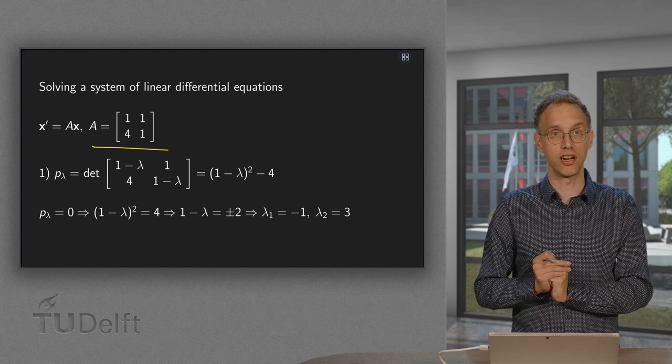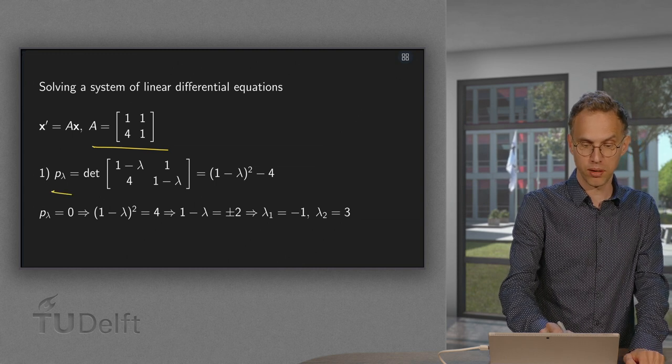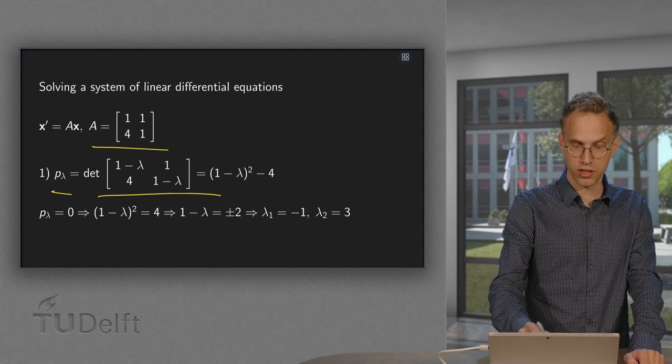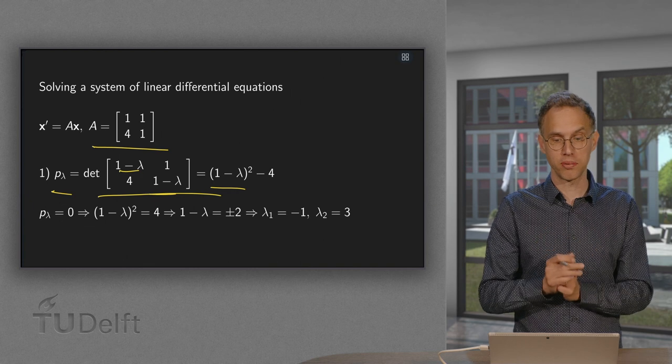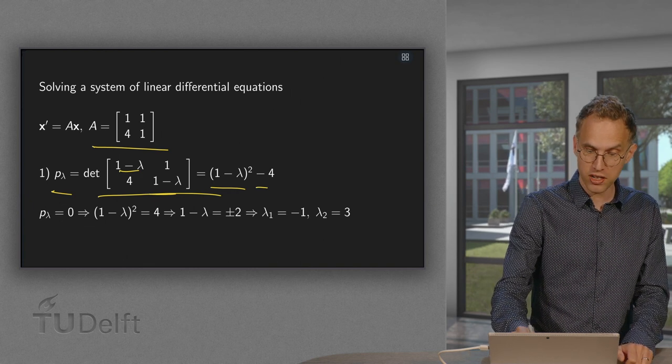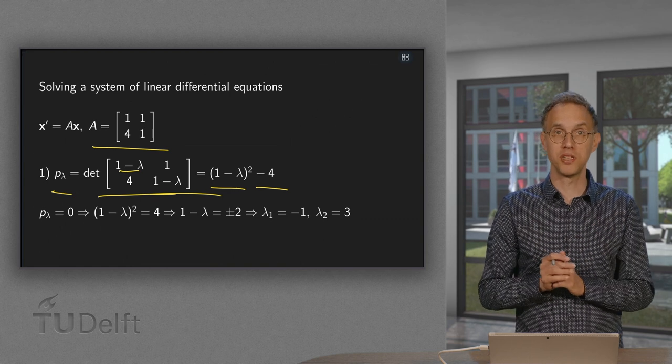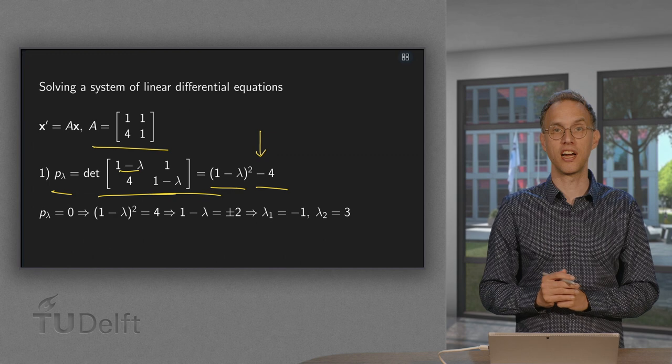Let's get started with the eigenvalues. So we compute p_λ equals the determinant of A minus λI. Here it is, equals (1 - λ) times (1 - λ). So in this case (1 - λ)² minus 1 times 4 minus 4. So already here sometimes mistakes are made in the computation of the determinant and then you get the sign wrong here.